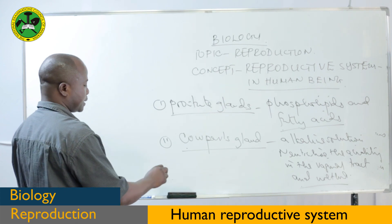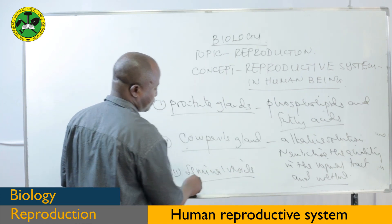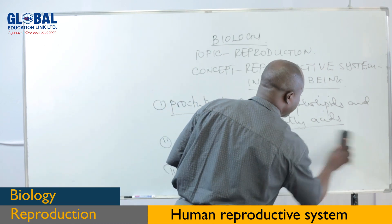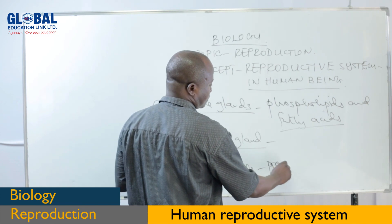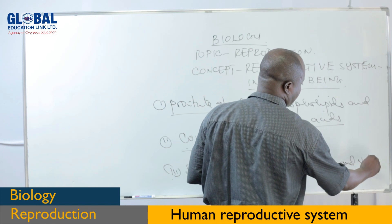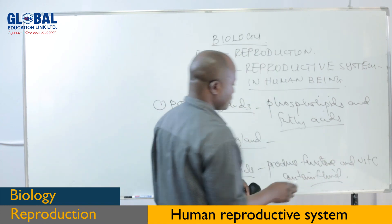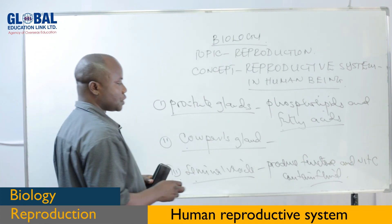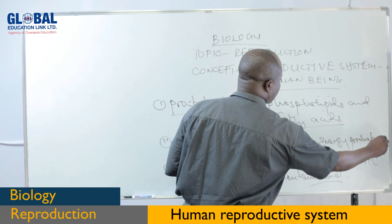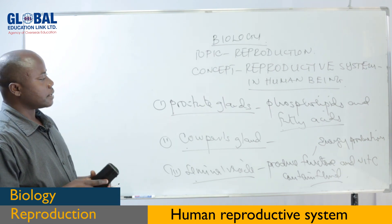The last accessory gland is the seminal vesicle. Like the other accessory glands, the seminal vesicle produces fluid containing fructose and vitamin C. This is for nourishment of the spermatozoa — particularly the fructose, which is used for energy production. This enables the spermatozoa to swim into the female reproductive tract in search of the female reproductive cell.